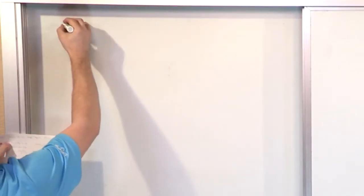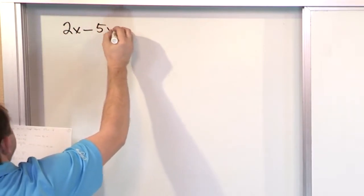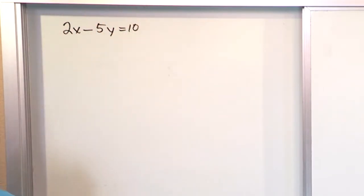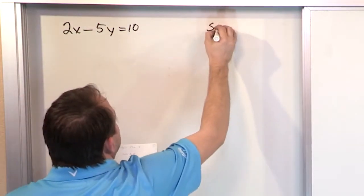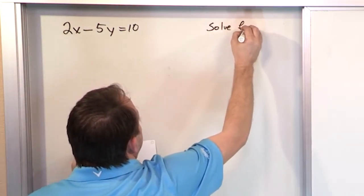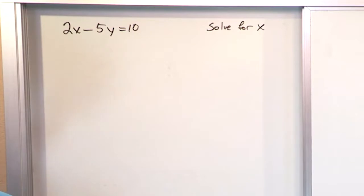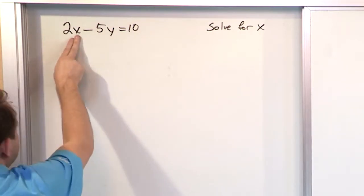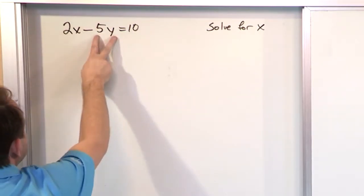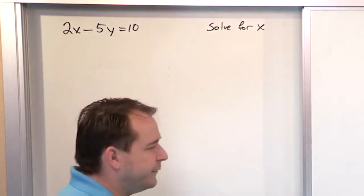What if we have 2x minus 5y equals 10, and it says solve for x. Now a lot of students get confused here because there's not only an x here, there's two of them, but there's also some y's. So they're like, what do I do?